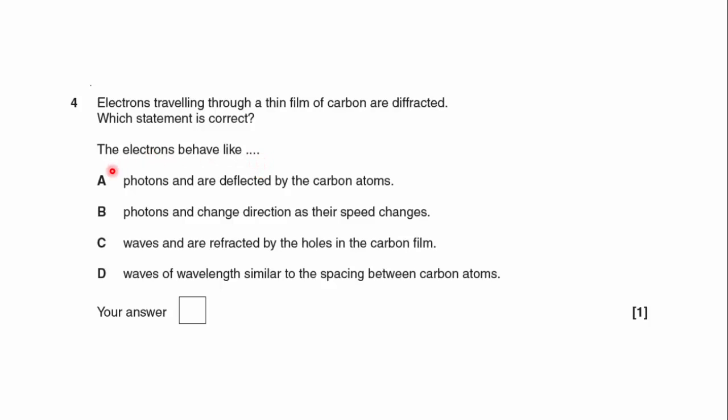And if we look at the first two options, they're both talking about photons. So photons are deflected by the carbon atoms and photons and change direction as their speed changes. Well, the photon is the particle. We use the photon to describe the particle behaviour of light, whereas diffraction is a wave property. So we're going to be looking at the wave options.